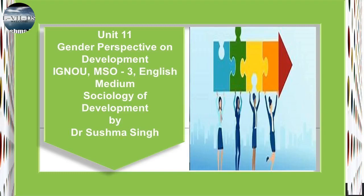Further, the Constitution in the same article at sub-article 3 lays down: nothing in this article shall prevent the state from making any special provision for women and children. The Constitution thus gives equal status to women as citizens while also taking into consideration some special disabilities which the state may come forward to rectify through affirmative action.